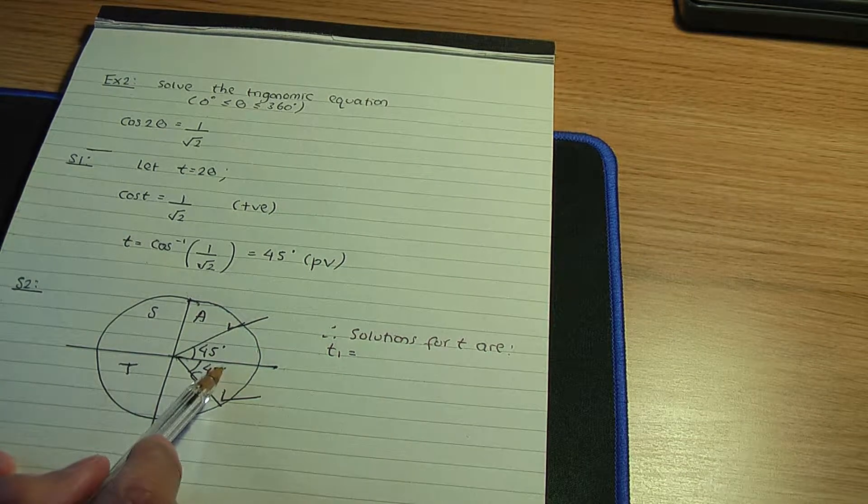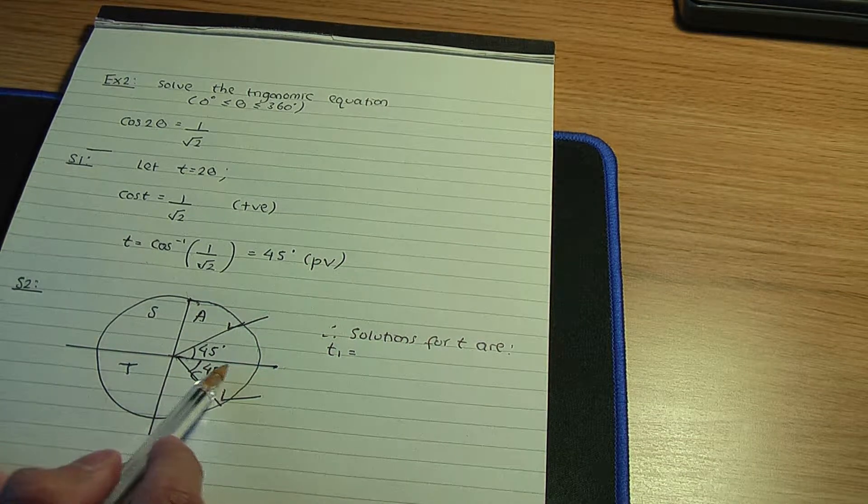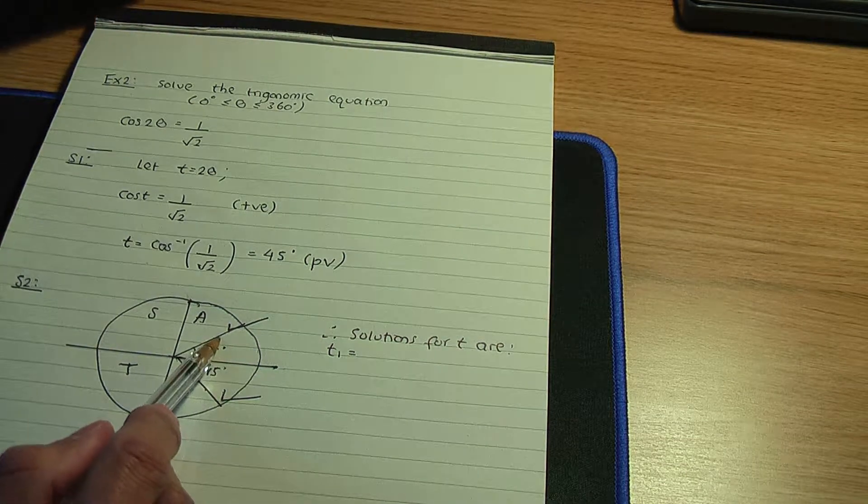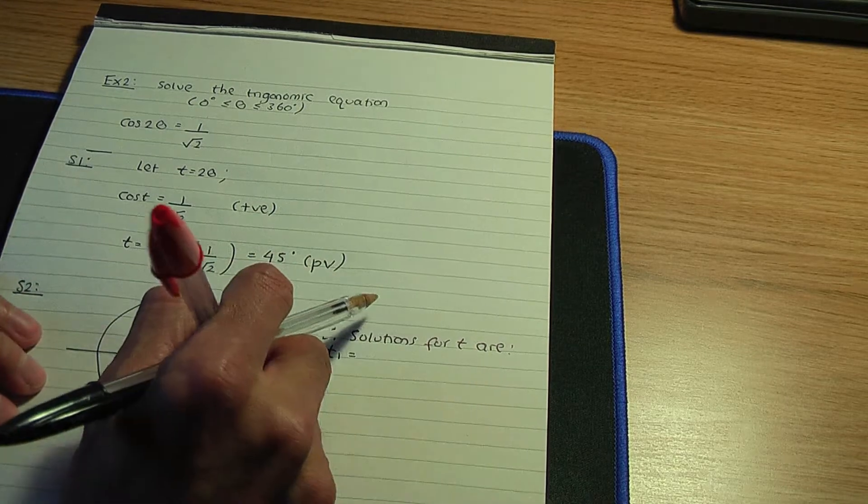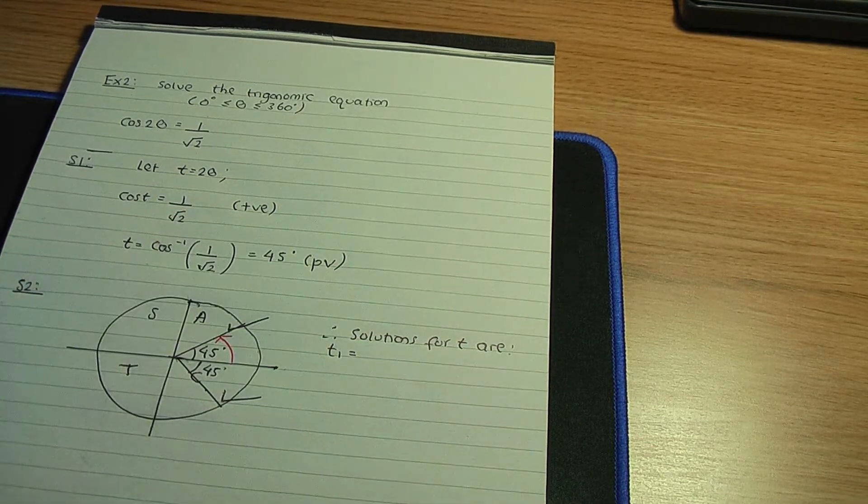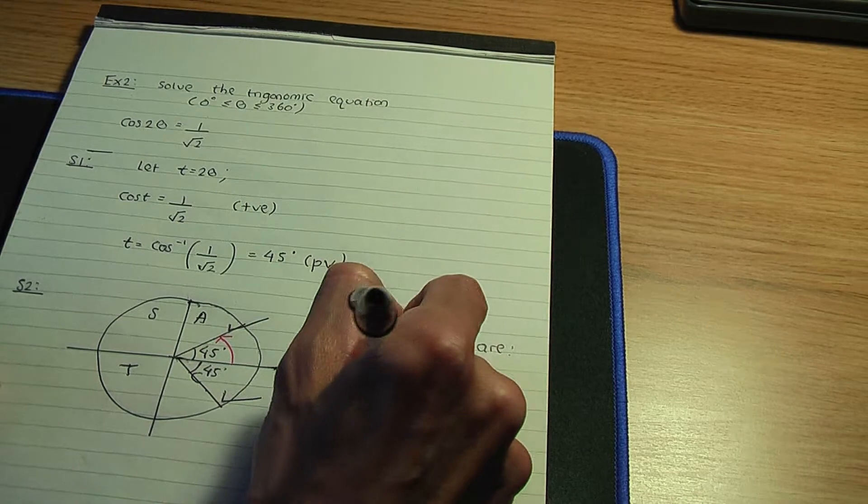The first solution, t1, measured from our initial line until we hit the first line. Let me use a red pen. That is the angle that we're after, so that is 45 degrees.